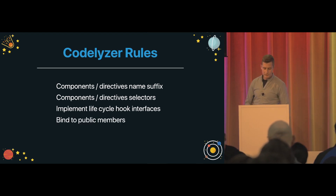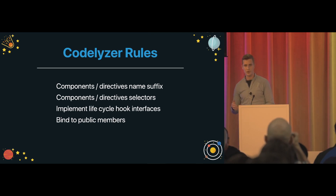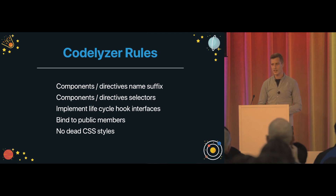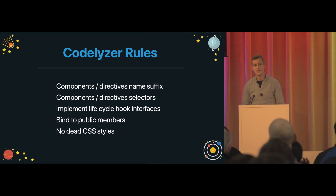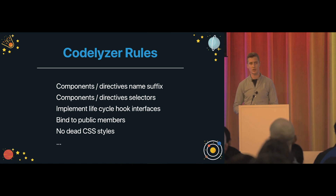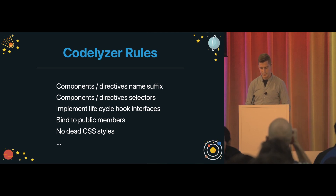It can verify if you have bindings to public members or bindings to private members or private behavior. It can also verify if your components have dead CSS, though it doesn't cover 100% of cases due to dynamic behavior. You can find more rules at colorizer.com or github.com/mgit/colorizer.